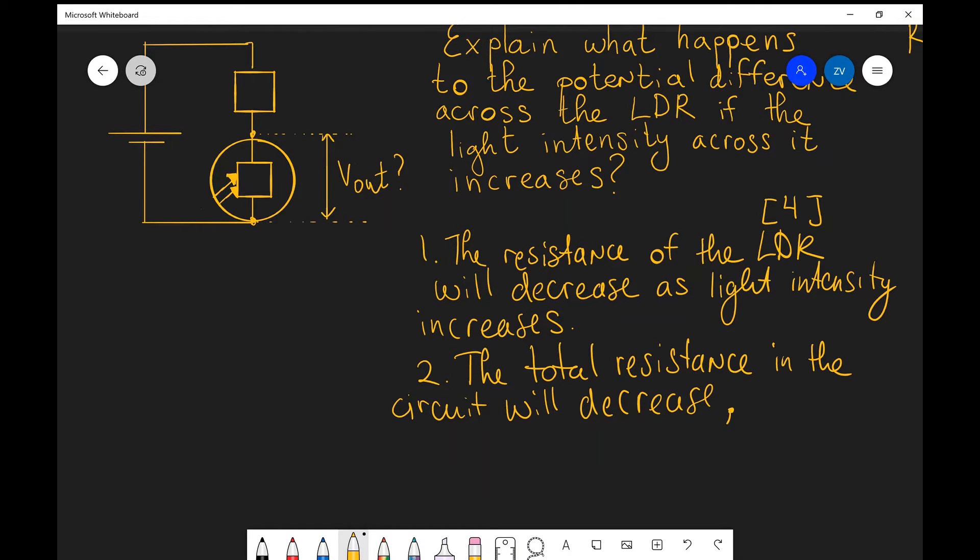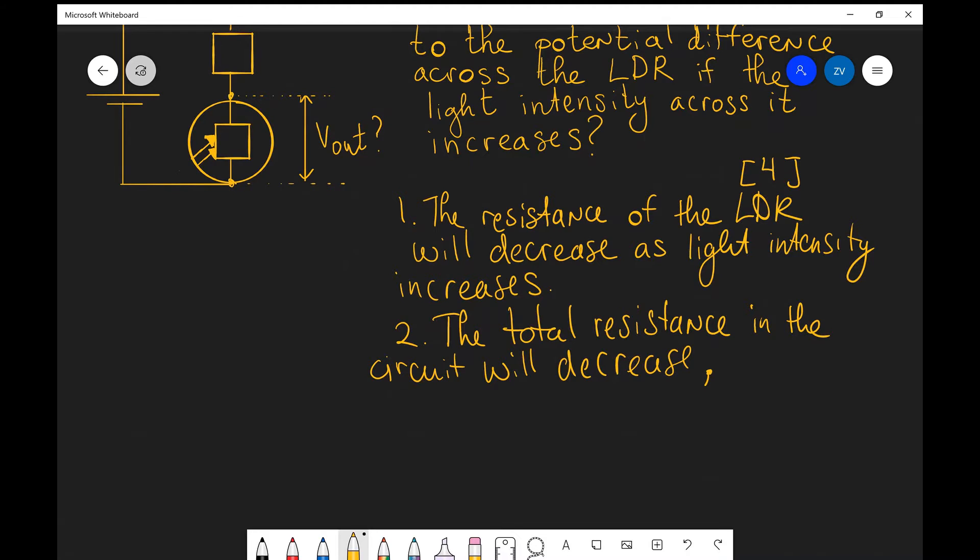Finally for mark 2 or for point 2 we need to think about what's happening to the current. Remember if the resistance is decreasing then the current has to be doing the opposite. The current is always doing the opposite. So let's just say that that increases or increasing the total current in the circuit.